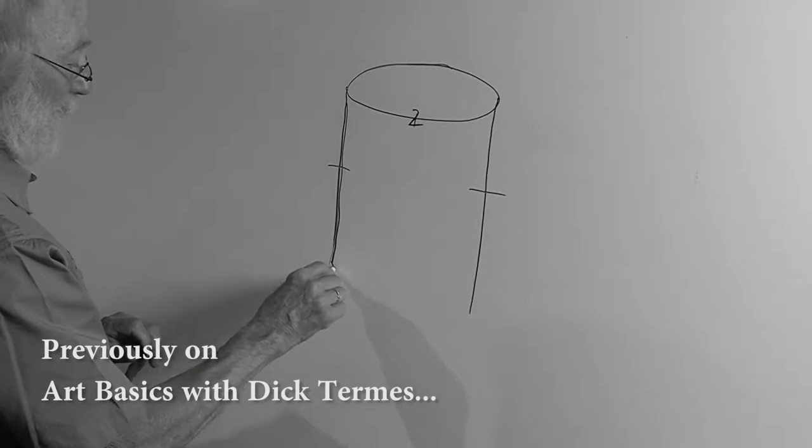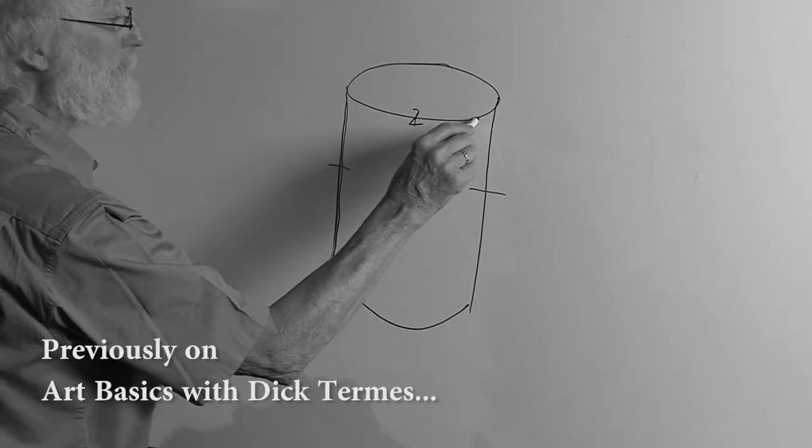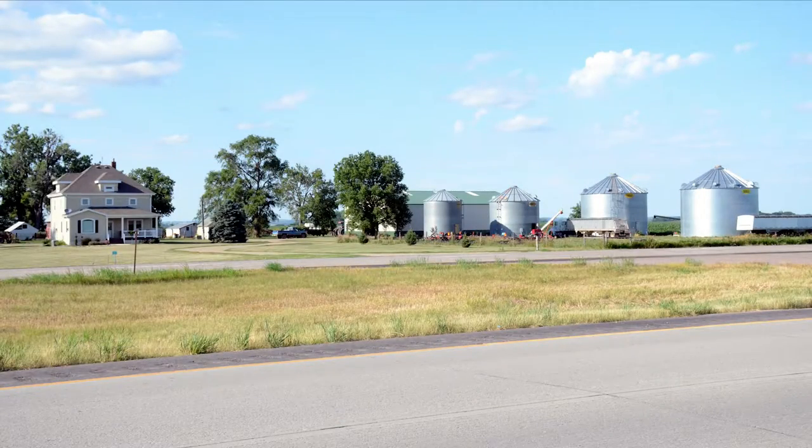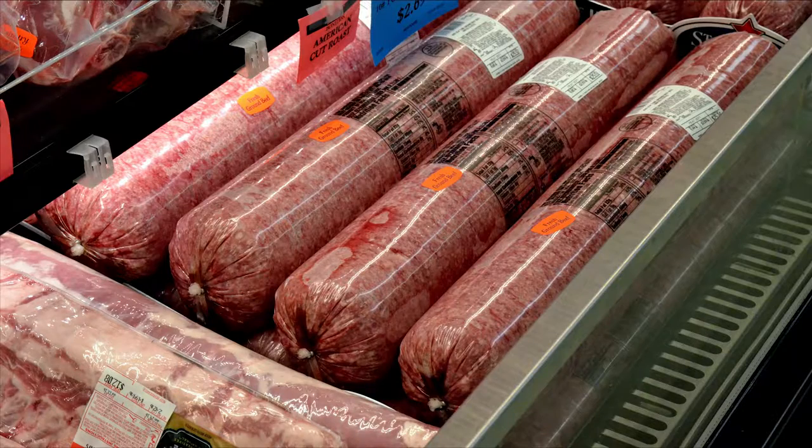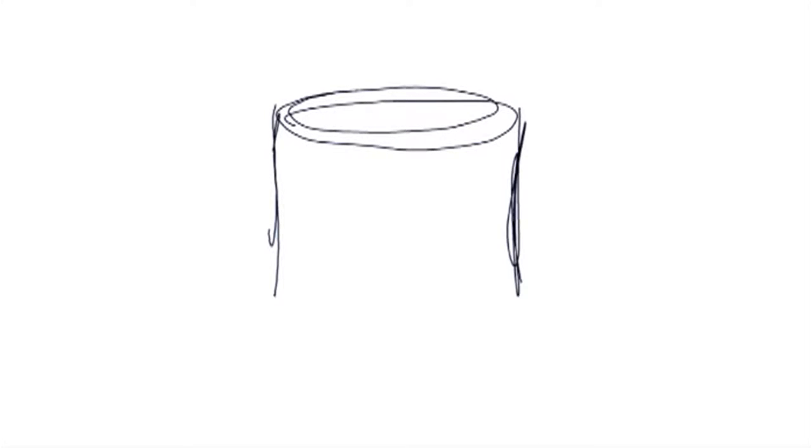In previous episodes we learned techniques used to draw a cylinder. It is very important because we see this simple form in many of the things around us every day. So now we're going to apply the cylinder to realism and see what kinds of realistic images can come out of what we know about the cylinder.